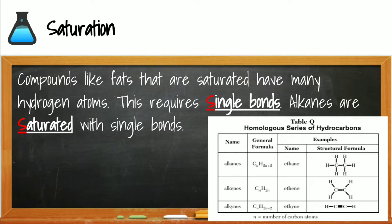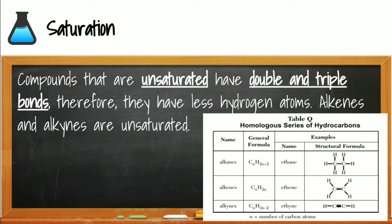Unsaturated hydrocarbons contain a double or triple bond between the carbons. Hydrogen can only make one bond, so hydrogen can never have a double or triple bond. The double or triple bond between the carbons means there is less than the maximum amount of hydrogen attached, so both alkenes and alkynes are considered unsaturated.